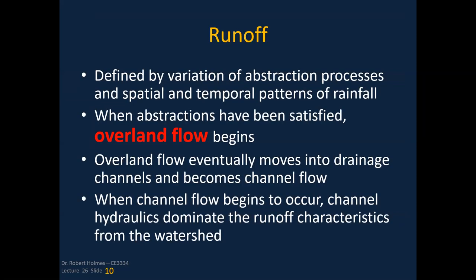Runoff is defined by the variation of abstraction processes and spatial and temporal patterns of rainfall. Rainfall is not always evenly distributed across the entire drainage area, and there are non-homogeneous factors dealing with abstraction and infiltration across the watershed. When abstractions have been satisfied — the initial abstraction from the NRCS method and then storage — overland flow begins as excess precipitation. When channel flow begins, the channel hydraulics dominate the runoff characteristics.